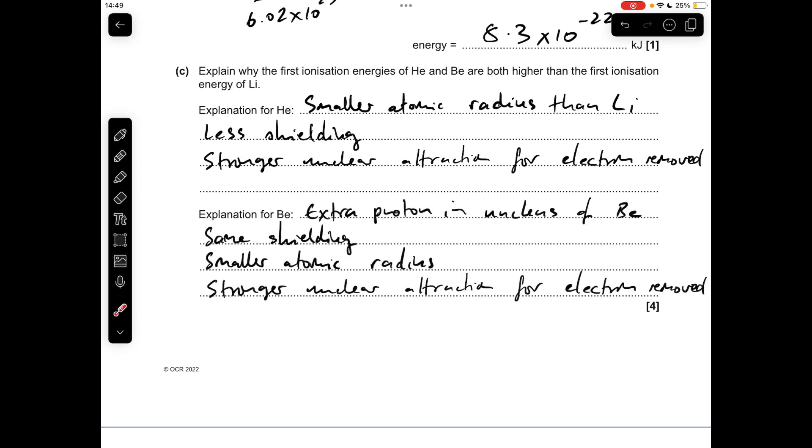And for the case of beryllium, there's an extra proton in the nucleus of beryllium, but there's the same amount of shielding. So the atomic radius goes down a little bit, so therefore there's a stronger nuclear attraction for the electron removed.